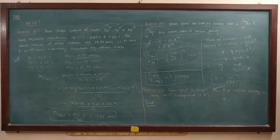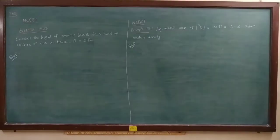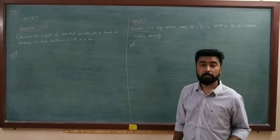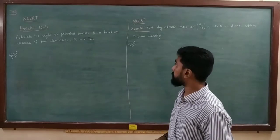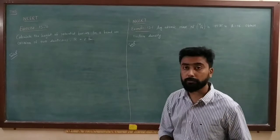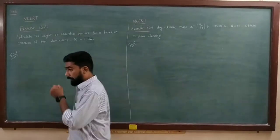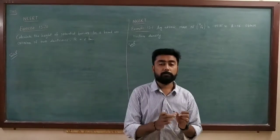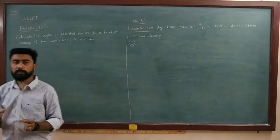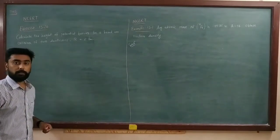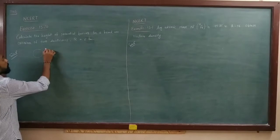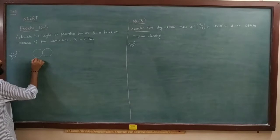Take a screenshot and we will start new examples. The next one is exercise 13.20: calculate the height of the potential barrier for a head-on collision of two deuterons, where the radius r of a deuteron nucleus is given as 2 fm. We have to calculate the potential barrier when two deuterons undergo a head-on collision.